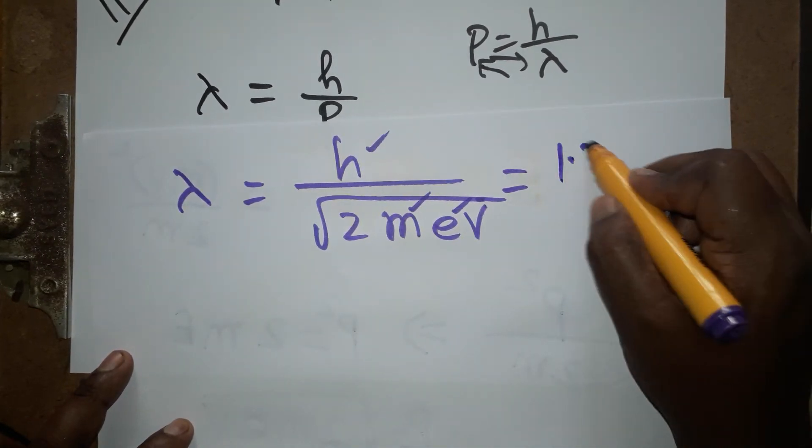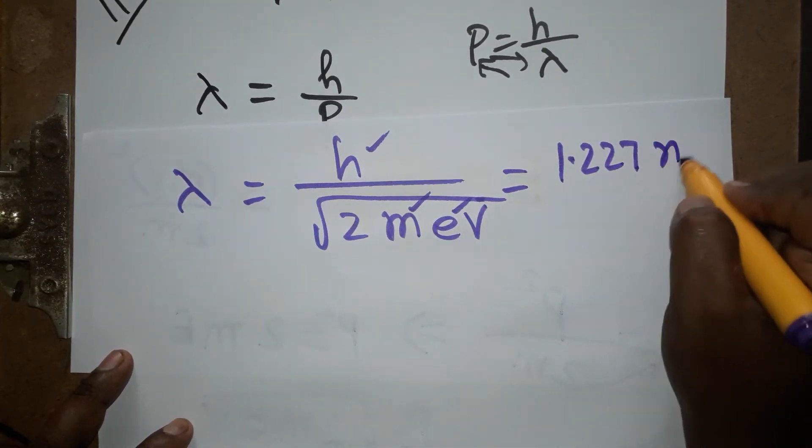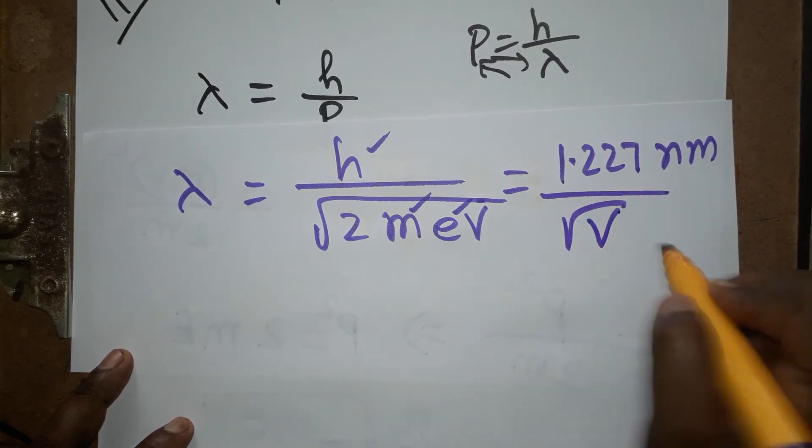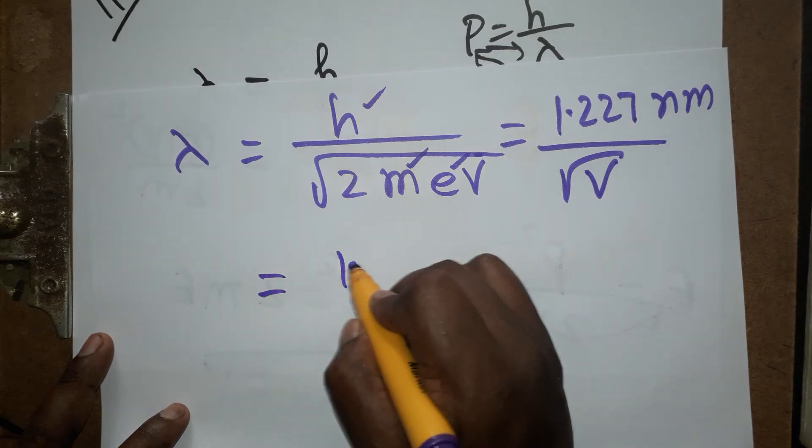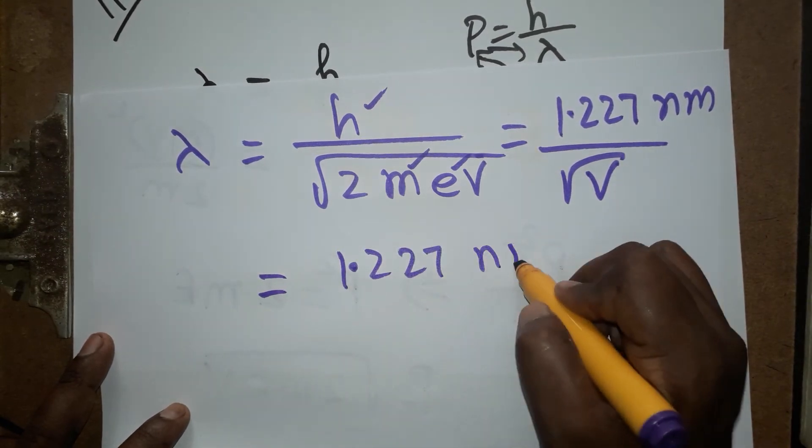Volt is given in the problem, 100 volt. If you are substituting this value 100 volt, we are going to get 10. If you are doing this, 0.1227 nanometer.